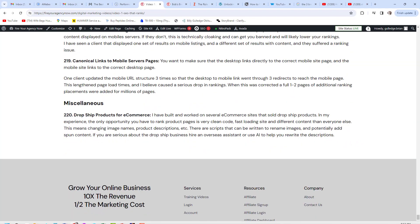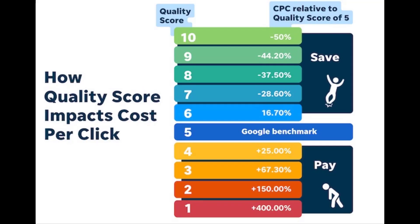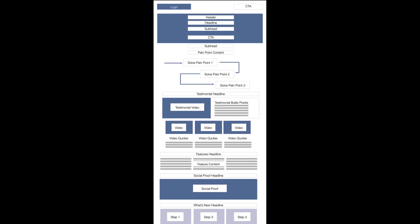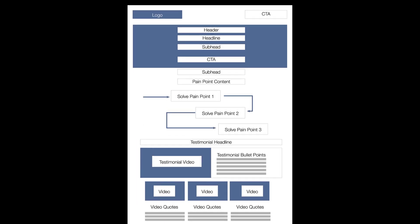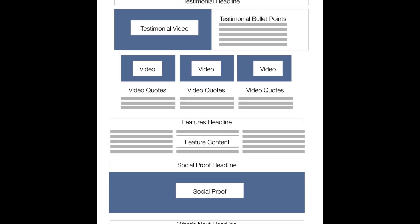Advertising platforms use a similar algorithm to determine your quality score — an arbitrary score given to each page based on how it relates to the keyword. This helps platforms keep irrelevant results off certain searches, but it also allows them to artificially inflate the price of a click. The code structure for paid landing pages is similar to SEO structure, with a few major differences.